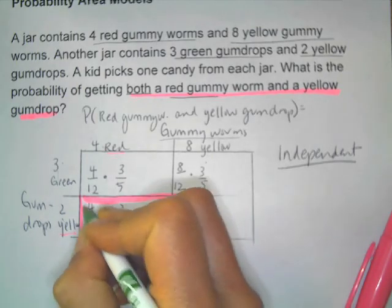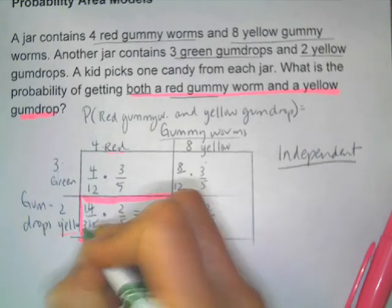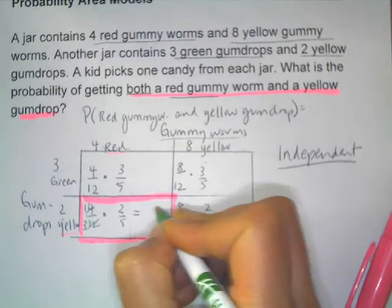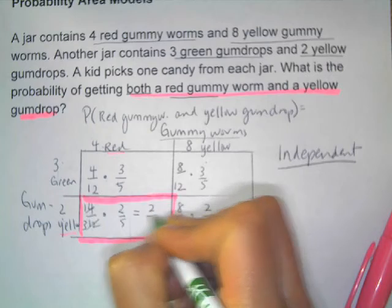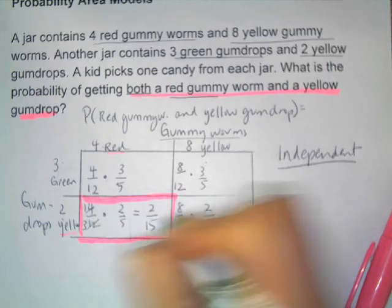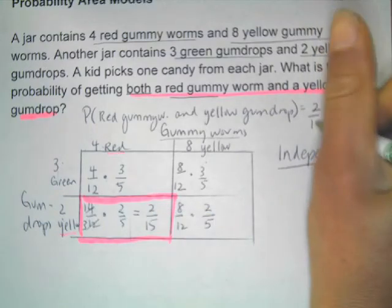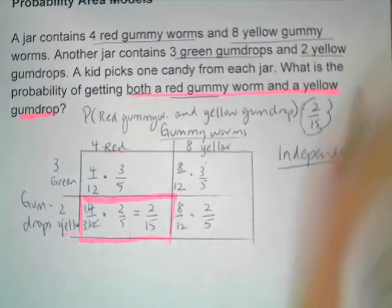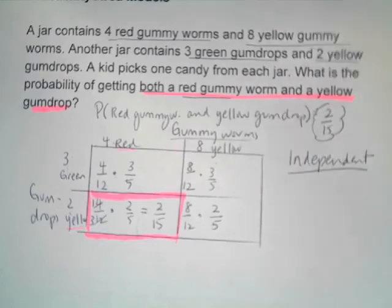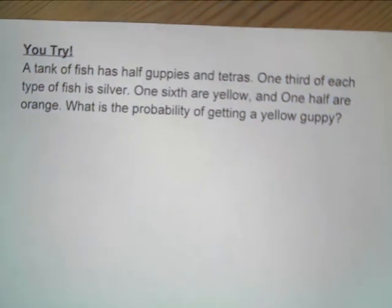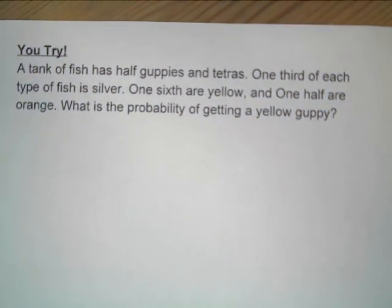I can simplify first: four-twelfths simplifies to one-third. Multiplying across, one-third times two-fifths gives two-fifteenths. So the probability is two-fifteenths. Now I'm going to put another problem up for you to try.